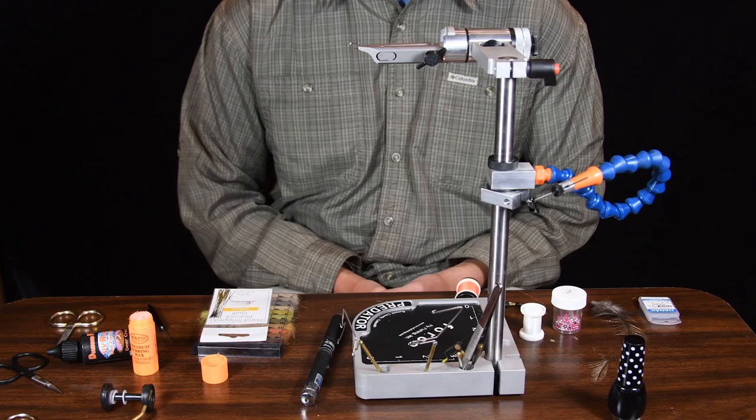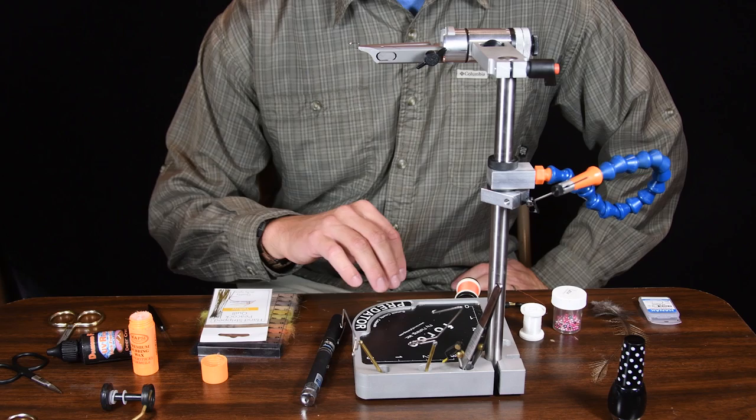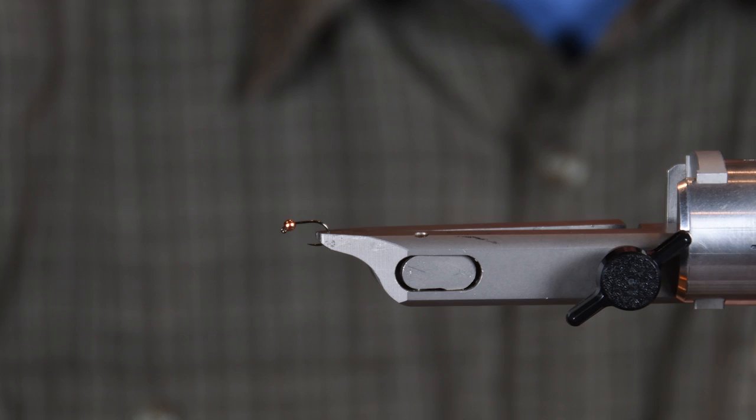We're gonna tie a little quick, easy, simple fly but effective. I've caught fish on this fly all over the US. It's called the Olive Waltz Worm. I'm going to be using a number 16 Hanek 450 BL jig hook.